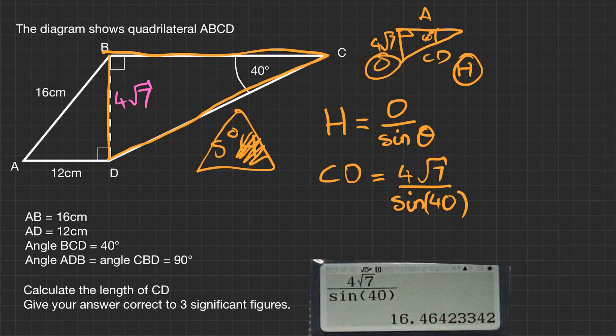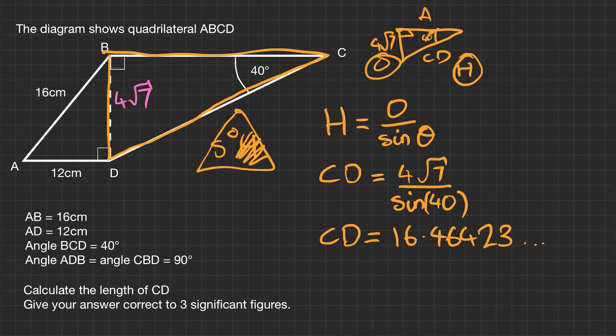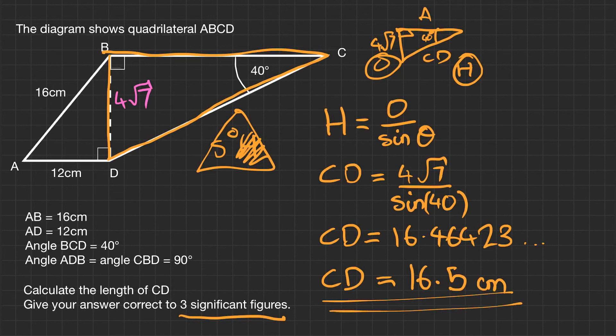And you'll get the value of CD equals 16.46423 and so on. And this actually says what we want to round it to: correct to three significant figures. So rounding it properly, CD equals 16.5 centimeters. Again, making sure you write those units as they're really important. You could lose marks if you don't write them. If the paper gives you the units already, it doesn't matter too much. Just make sure if they're not there, you've written them down.